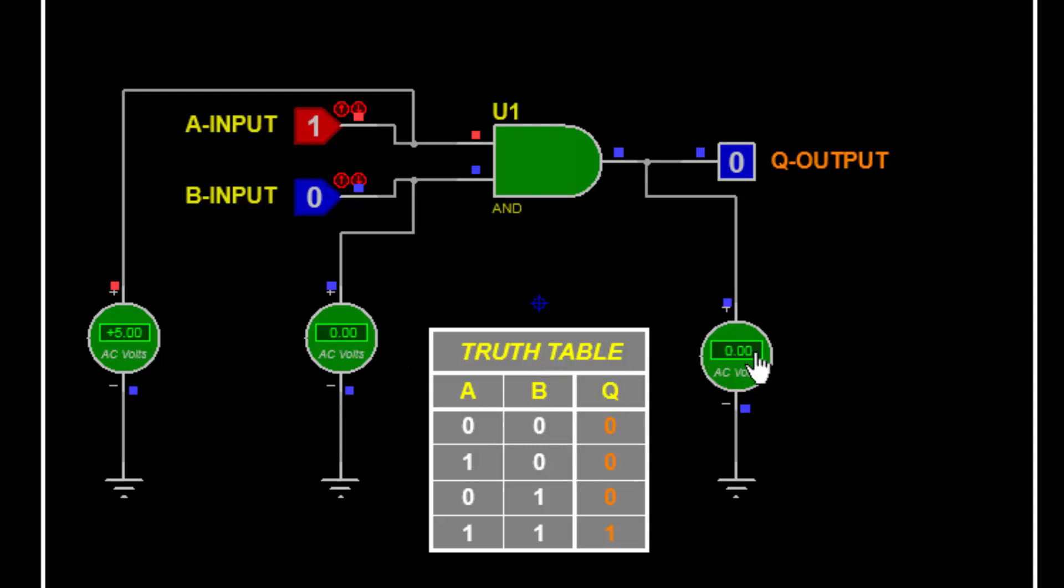This pin is 1, input 1. It is showing here 1, 0. This one is 0, this one is 1. 0 multiply by 1, 0.